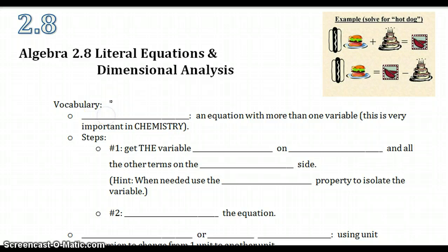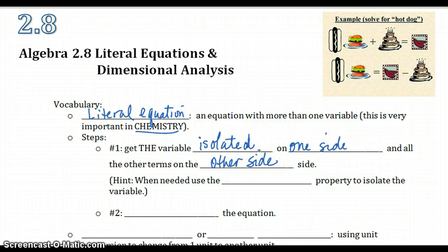A literal equation is an equation that has more than one variable. This is going to be very important when you get to chemistry class. So we're going to have more than one variable in our equation that makes it a literal equation.